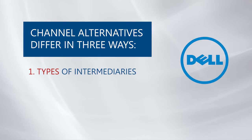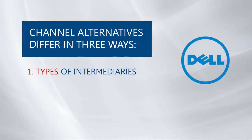Using many types of resellers in a channel provides both benefits, because you can reach more different buyers, but also drawbacks, because it's difficult to manage and control, and conflict may arise. This would be a long channel. Dell, for example, decided to use a short channel, meaning selling through the internet.